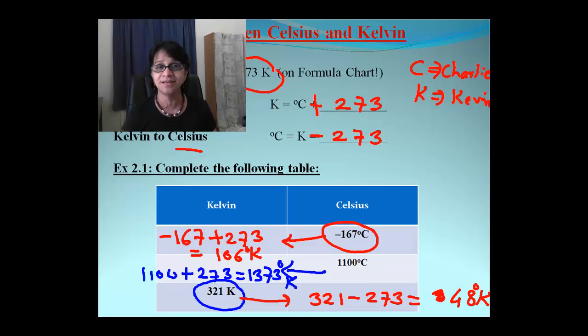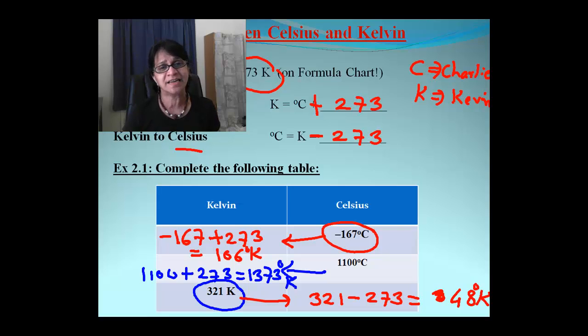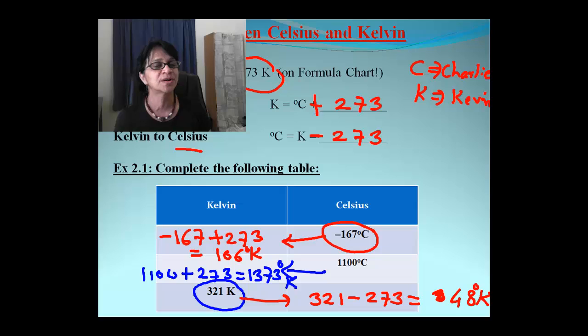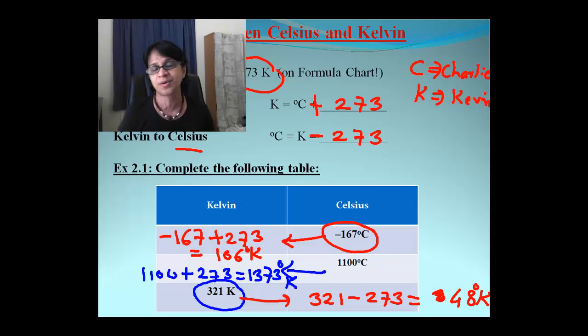So just by adding or subtracting 273, we can do the conversion. The only thing to keep in mind is which direction you are going. As I said, I like to remember with Charlie as the younger brother and Kevin as the older brother, and that works very well.